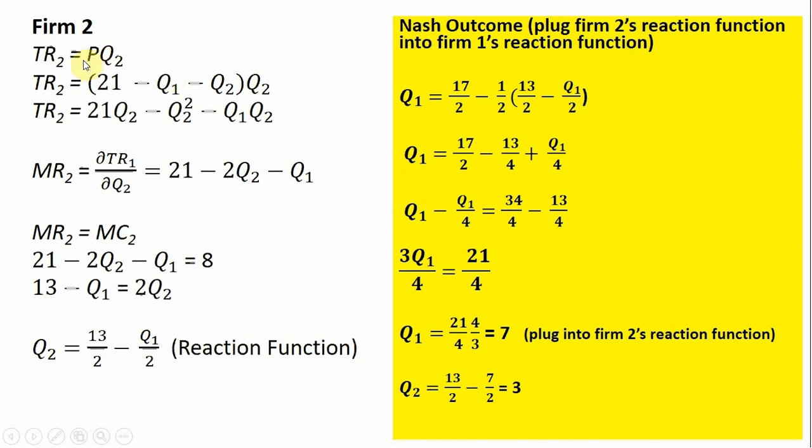For Firm 2, it's basically the same setup. Firm 2's total revenue is price times its output. The price equation is unchanged, but this time we're going to multiply what's in parentheses by Q₂.